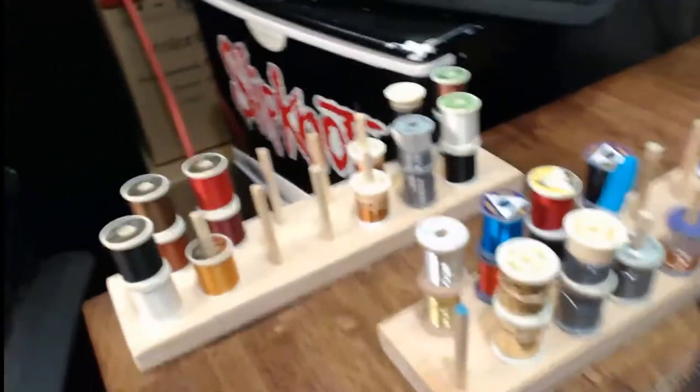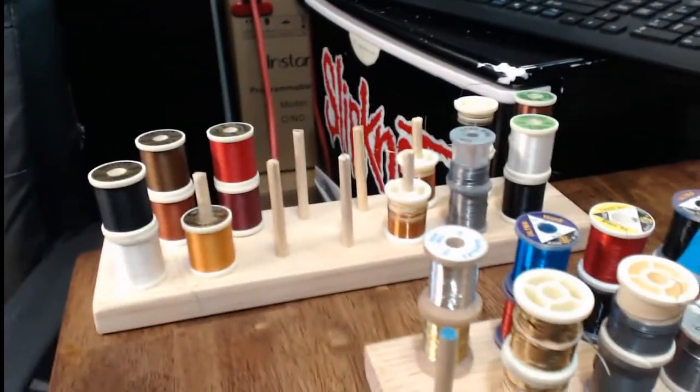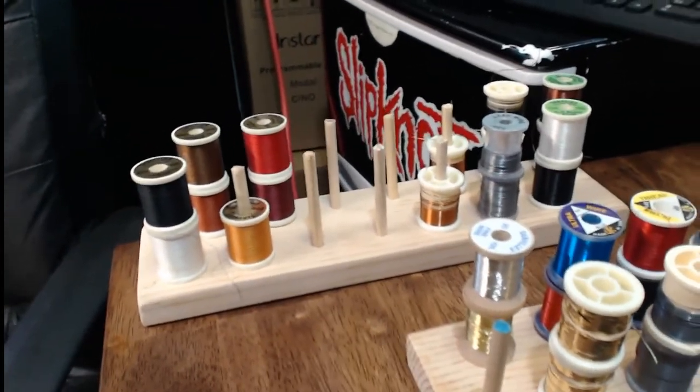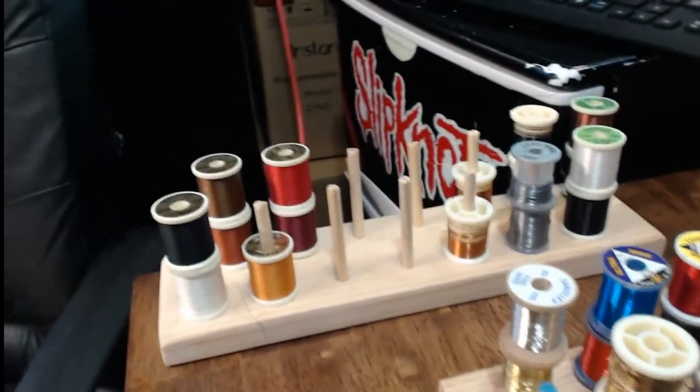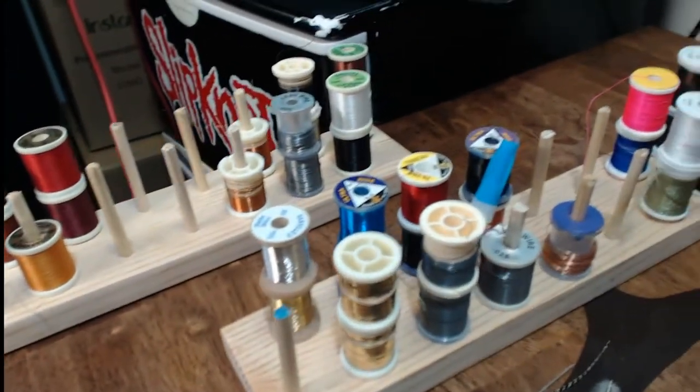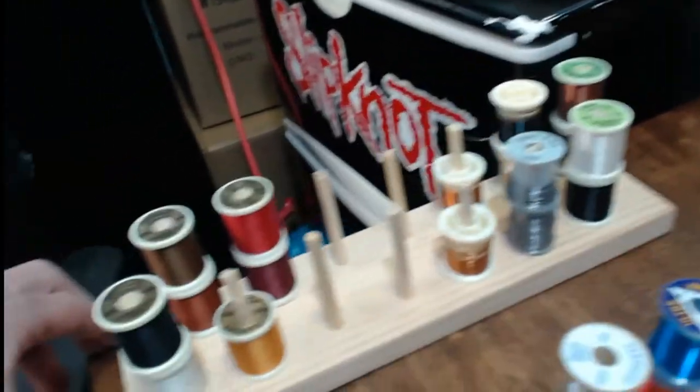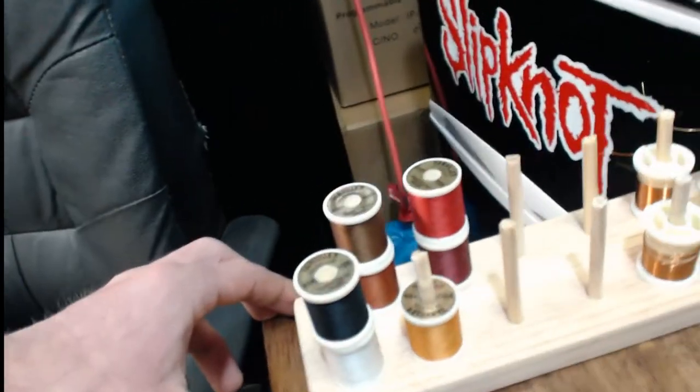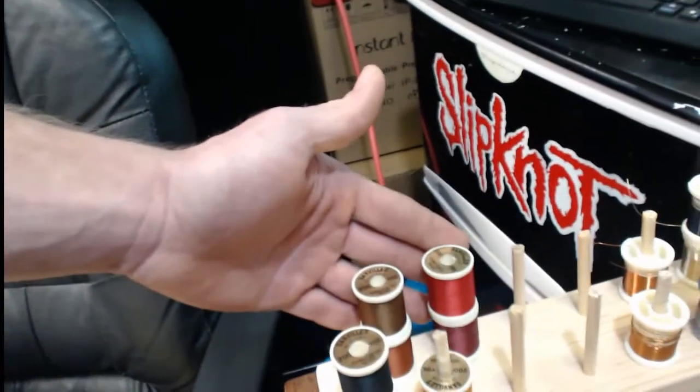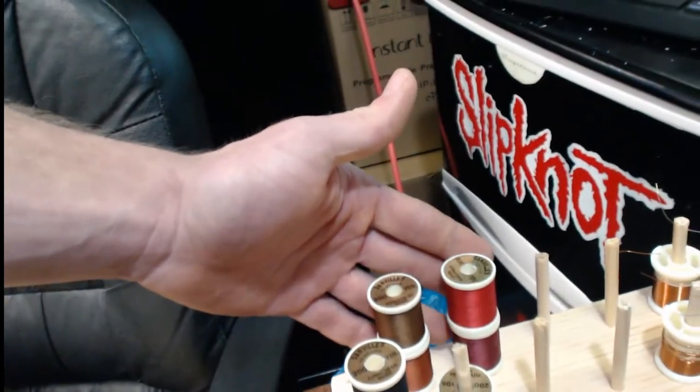I progressed and bought more material than what I could hold in that, so I went off and bought dowel rods and pieces of wood and drilled holes and made new stuff. To go over this real quick, this is my 70 denier thread.